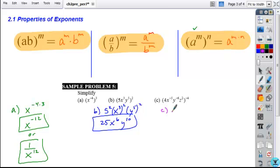And then finally, problem C is the same idea. Every factor in your base is going to have a power of negative 4 applied to it. So I'm going to apply that power first.